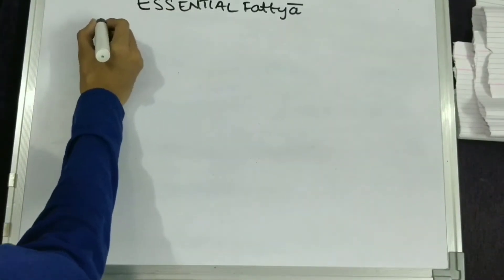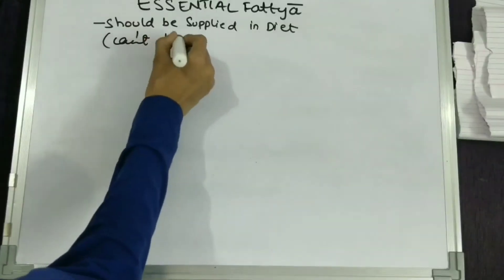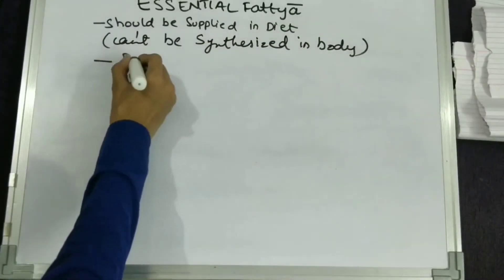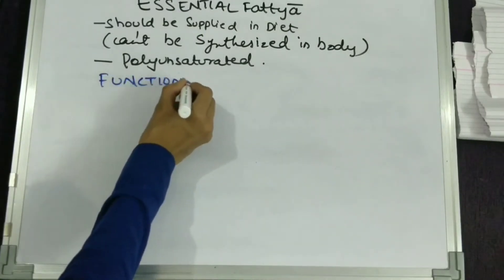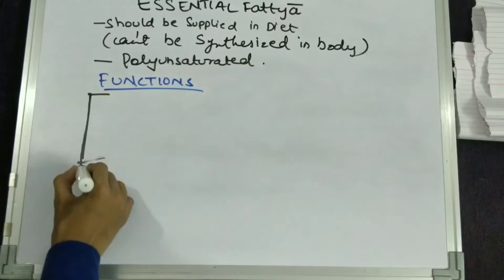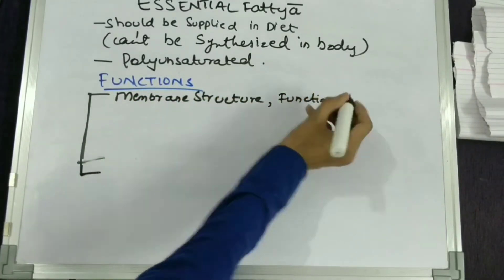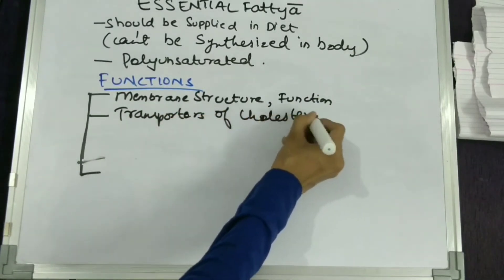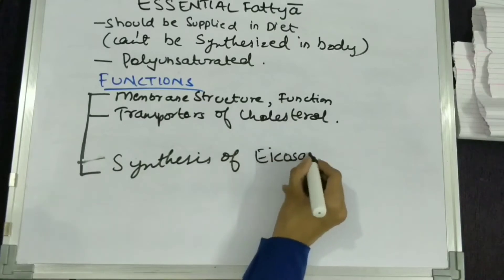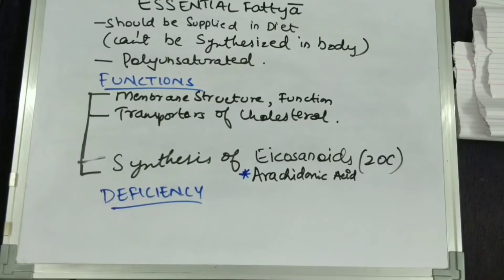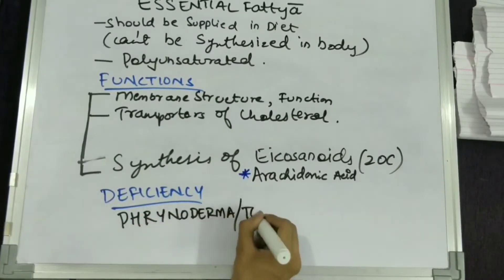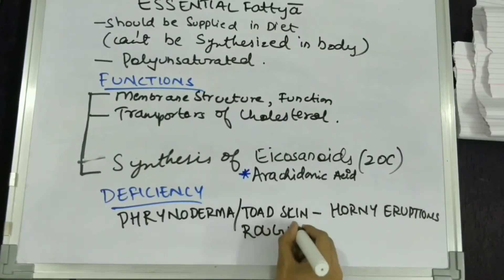Now let's see what essential fatty acids are. These are fatty acid molecules that must be supplied in the diet because they cannot be synthesized in the body. They are polyunsaturated fatty acids. Their functions include acting as the structural and functional unit of membranes, as transporters of cholesterol, and as precursors of eicosanoids — a 20-carbon structure, with the precursor being arachidonic acid. The deficiency symptom of essential fatty acids includes phrynoderma, or toad skin, which is characterized by horny eruptions or roughness of the skin.